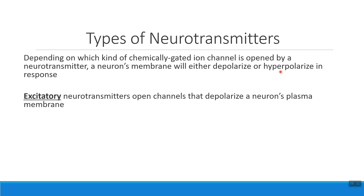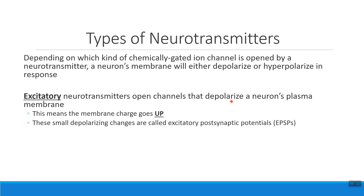When we're talking about our types of neurotransmitters, the first type are called excitatory neurotransmitters, which depolarize the membrane charge. An excitatory neurotransmitter is going to make the charge on the neuron's plasma membrane go up. It's going to excite the neuron, make it ready to talk to its neighbor. So the membrane charge goes up, it depolarizes the membrane, and it creates a small change in charge that we abbreviate as an EPSP.